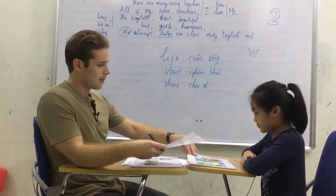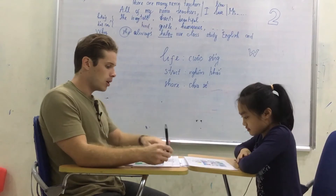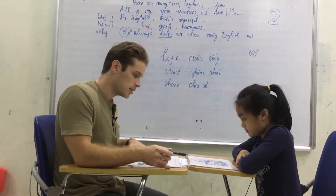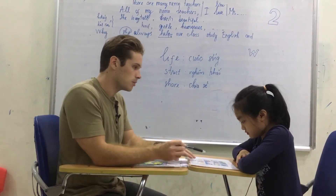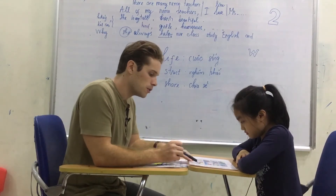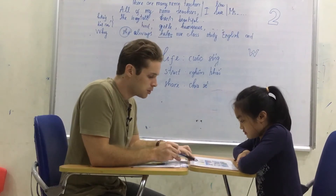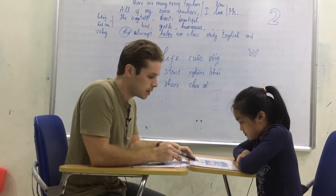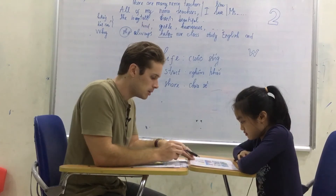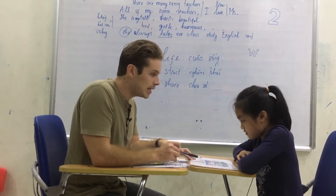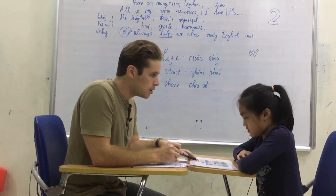Good. Now we need to find the odd one out in the row and say why it's different to the others. I'll do the first row and you can do the rest. So here, picture three — the book is different because the lemon, the pineapple, and the orange are fruit. We eat them. We don't eat a book; we read a book.